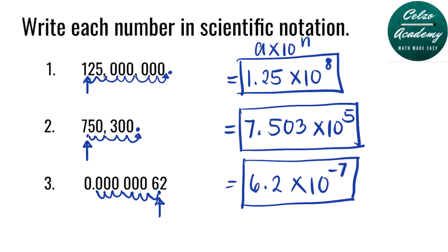Remember that if you have a large number, you are expecting a positive power. If a number is less than 1, you're expecting a negative exponent.